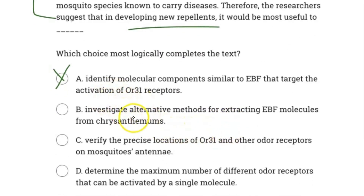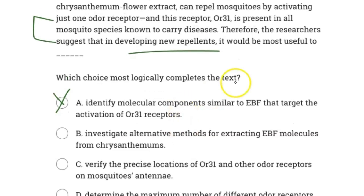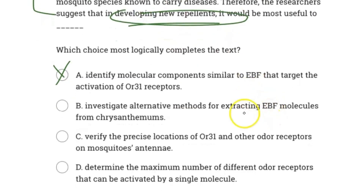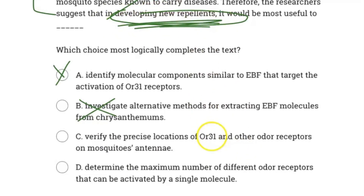Let's look at the other answer choices. B says investigate alternative methods for extracting EBF molecules — not the correct answer, because the passage focuses on developing new repellents, not just relying on the EBF molecules, so it can't be B. C says verify the precise location of OR31 and other odor receptors on mosquitoes' antenna — that's incorrect, because while OR31's presence is important, the passage still calls for developing new repellents, not continuing to study different types of receptors. They already know OR31 is one receptor in all these mosquitoes, so we don't need to find new odor receptors on the mosquito's antenna.